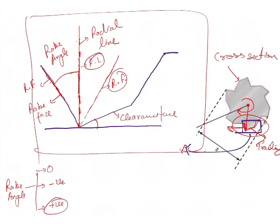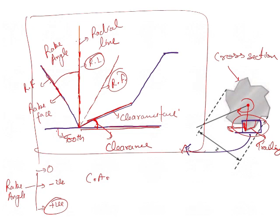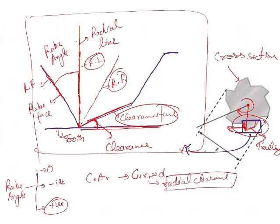Now we will discuss the clearance angle — the angle formed between the clearance face and the tooth surface, which is the surface the blade is cutting. This angle is called the clearance angle. If the clearance face is curved, it is called radial clearance. The benefit of curving the clearance face is to decrease friction between the tooth and the back of the burr.